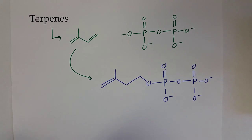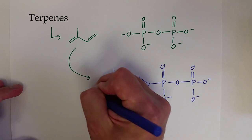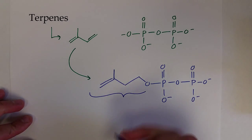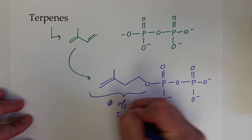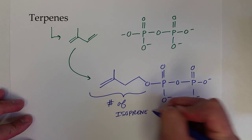This is an isopentanyl terpene. The big variation in terpenes is essentially the number of isoprene units can differ, so the number of isoprene can increase or decrease, usually by a factor of two.